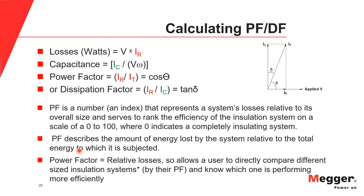Power factor is calculated by the ratio of real current divided by total current. Looking at the vector diagram, that's the same as the cosine of the angle that separates them. Dissipation factor — also known as tan delta — is simply resistive current over capacitive current. Power factor is dimensionless — it's an index that represents the system's losses relative to its overall size. Power factor is able to rank the efficiency of an insulation system on a scale from zero to one hundred percent, where zero would indicate a completely insulating system. It describes the amount of energy lost by the system relative to the total energy to which it's subjected.